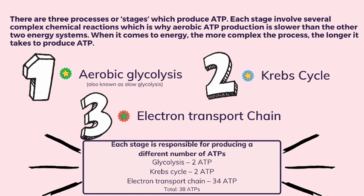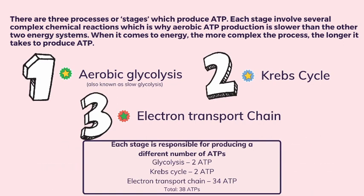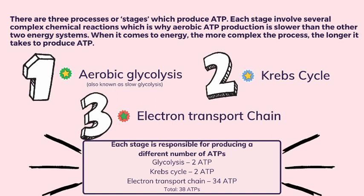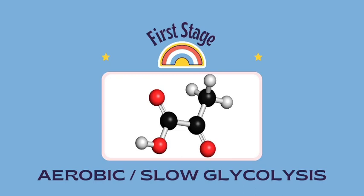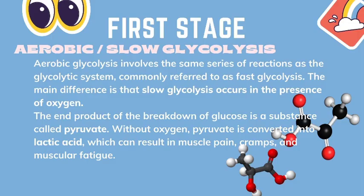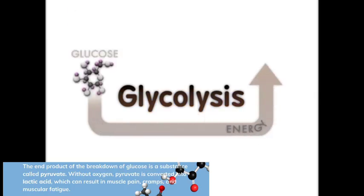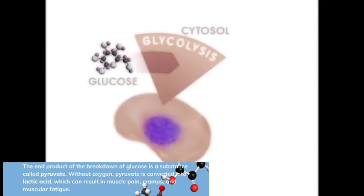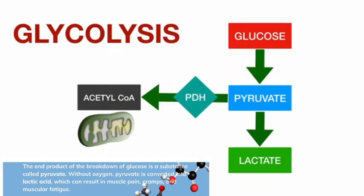Each stage is responsible for producing a different number of ATPs. Glycolysis produces 2 ATP, the Krebs cycle produces 2 ATP, and the electron transport chain produces 34 ATP, for a total of 38 ATPs. Aerobic or slow glycolysis involves the same series of reactions as the glycolytic system, commonly referred to as fast glycolysis. The main difference is that slow glycolysis occurs in the presence of oxygen. The end product of glucose breakdown is a substance called pyruvate. Without oxygen, pyruvate is converted into lactic acid, which can result in muscle pain, cramps, and muscular fatigue.